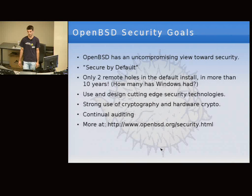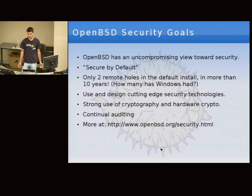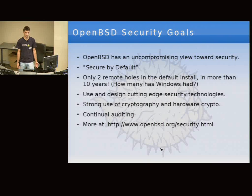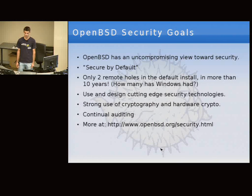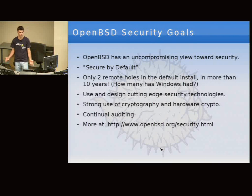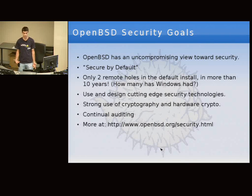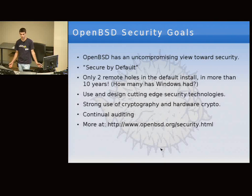We design and incorporate existing cutting-edge security technologies all the time. We use cryptography very strongly throughout the system. OpenBSD is based in Canada, in Calgary, where there are no export restrictions on cryptography. Our password files are encrypted with the Blowfish cipher — most systems use MD5 or 3DES, which is much weaker, so if your password file gets leaked it would be much harder to brute force. We also encrypt our swap partition by default, because applications may store passwords in the swap file if swapping occurs. We also have support for hardware cryptography devices to make it faster.